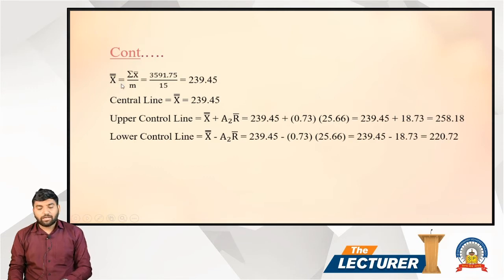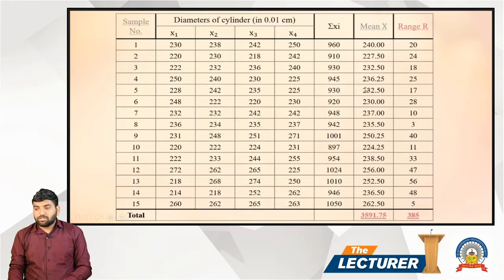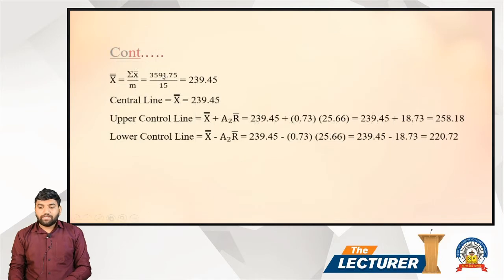The formula for X double bar is: X double bar equals sigma X-bar divided by m. So 3591.75 divided by 15 equals 239.45. This is our X double bar.